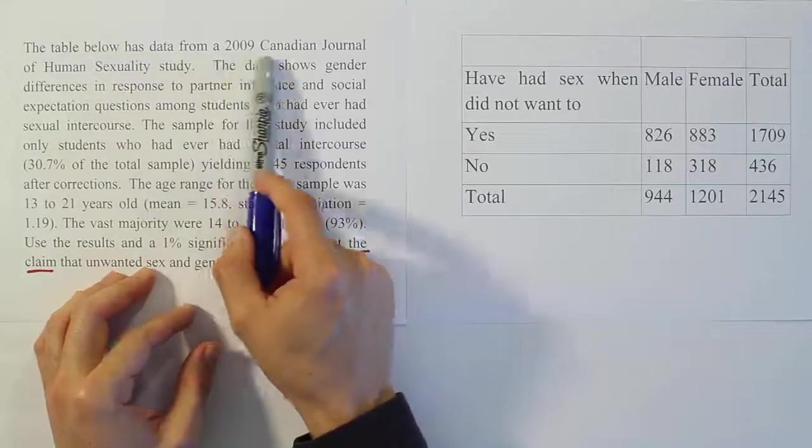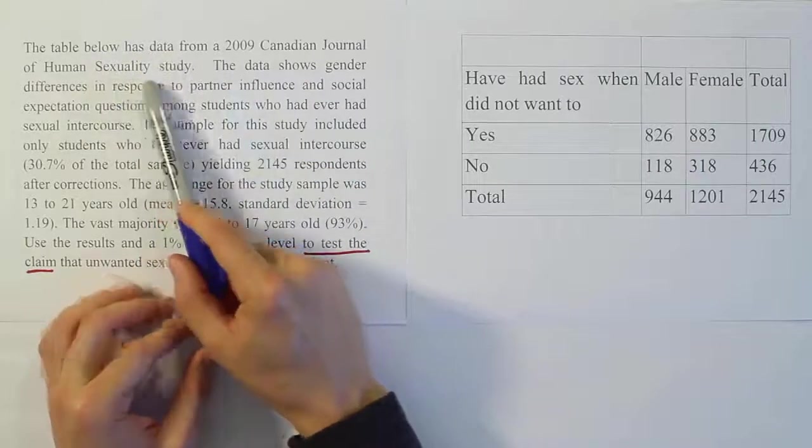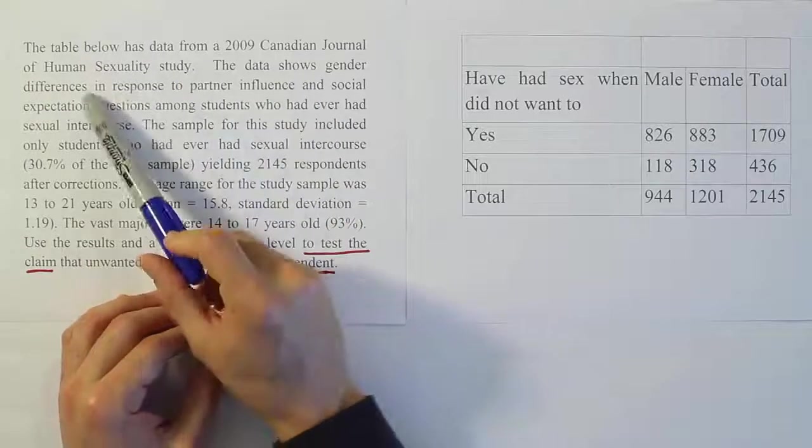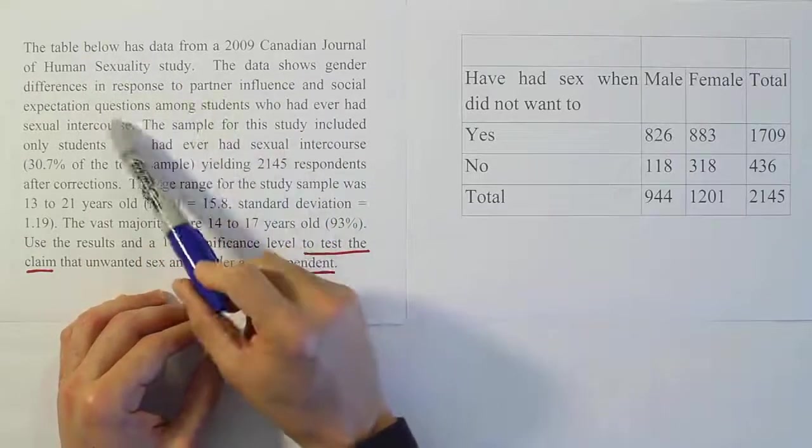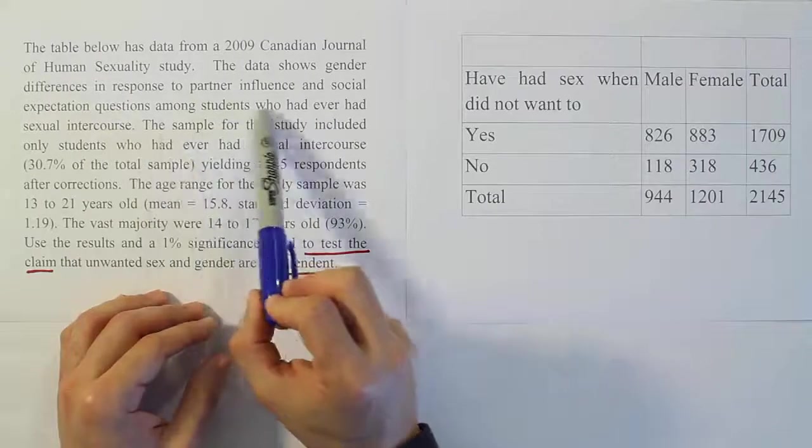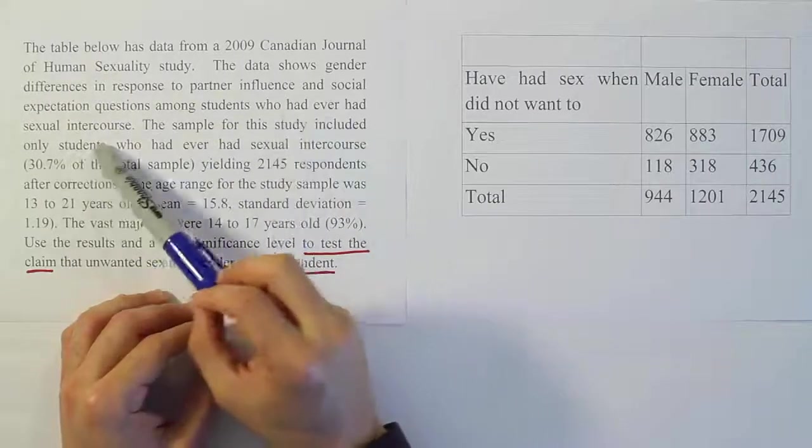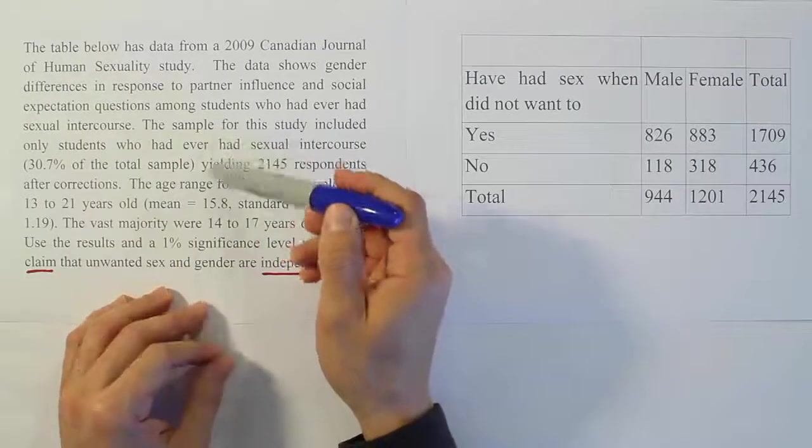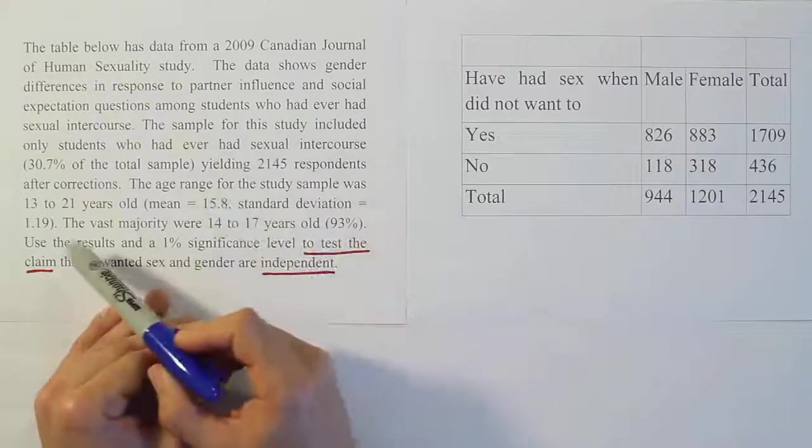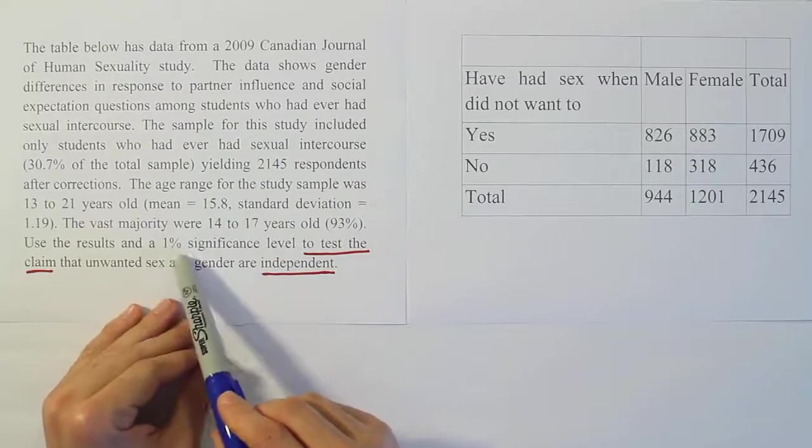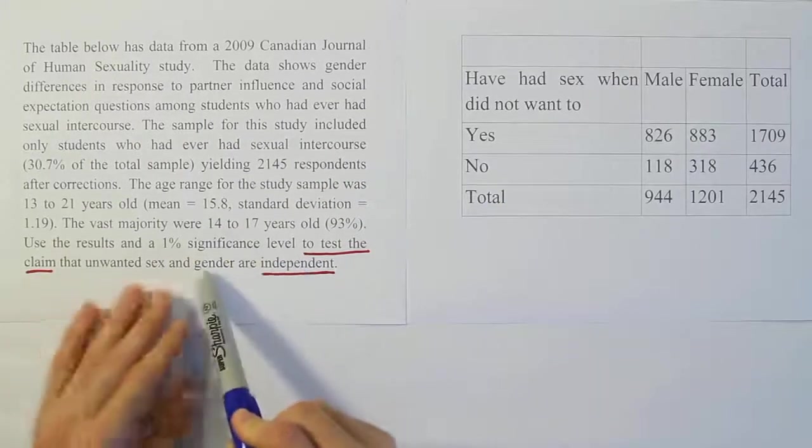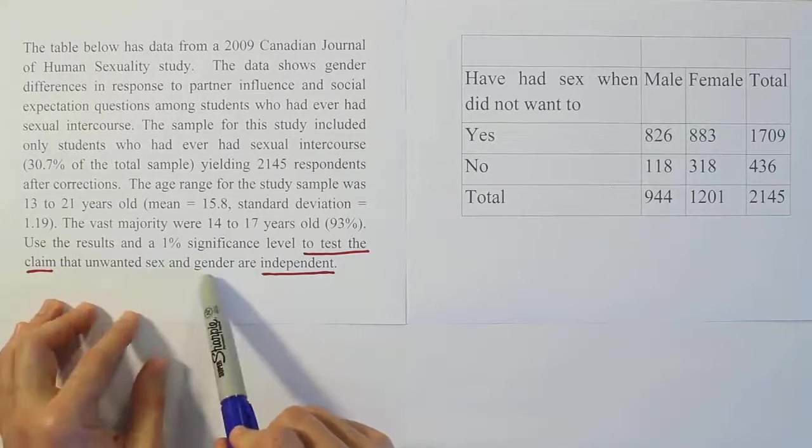The table below has data from a 2009 Canadian Journal of Human Sexuality study. The data shows gender differences in response to partner influence and social expectation questions among students who had ever had sexual intercourse. Use the results at a 1% significance level to test the claim that unwanted sex and gender are independent.